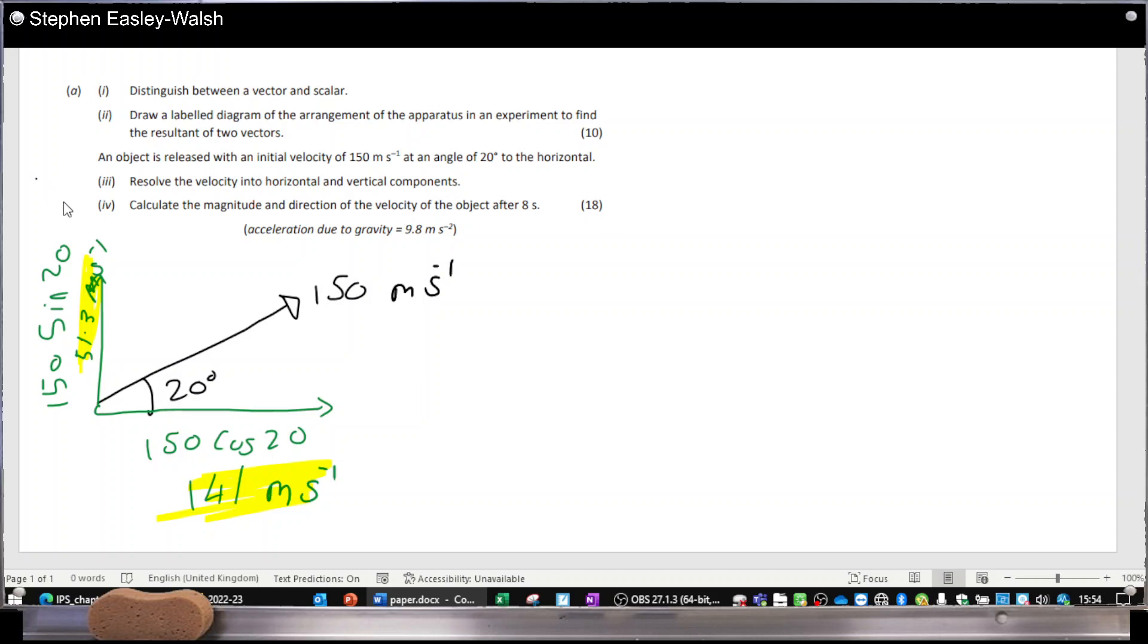Resolve the velocity and horizontal for the components. And then finally calculate the magnitude and direction of the velocity of the object after 8 seconds. So after 8 seconds, the horizontal component of the velocity is unchanged. It's still 150 cos 20. But the vertical component has changed. We can get it using the formula V equals U plus AT. T is 8. So that's still going to be the 141. And let's see what the other one will be. That's a negative, it's heading down. Minus 27.1 meters per second.